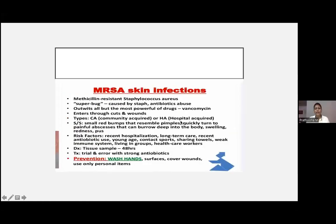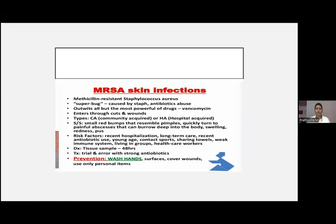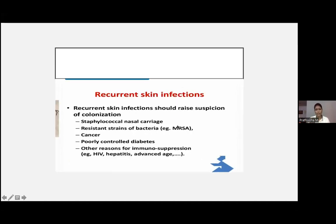MRSA skin infections — methicillin-resistant Staph aureus — occur due to excessive antibiotic abuse. The most powerful drug is vancomycin. The mode of entry is through cuts and wounds.